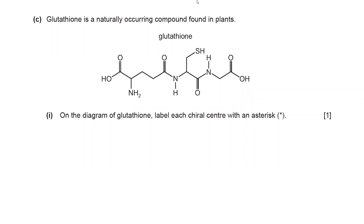Let's go to question 7c from summer 2021, question paper 4.1. It is a question on a compound called glutathione. You see the word 'thione' - that means there will be a sulfur in the molecule. The first part of this question is to label chiral centers with an asterisk in this compound.